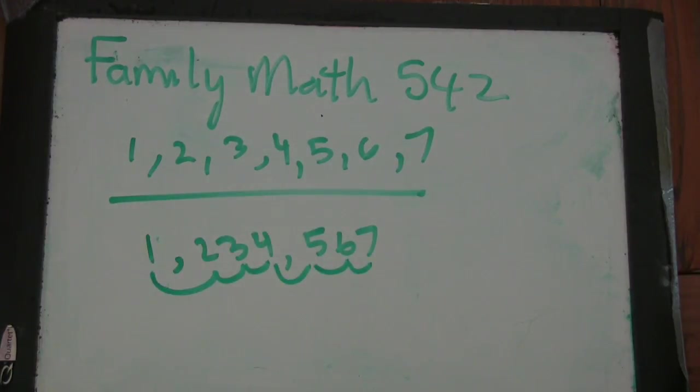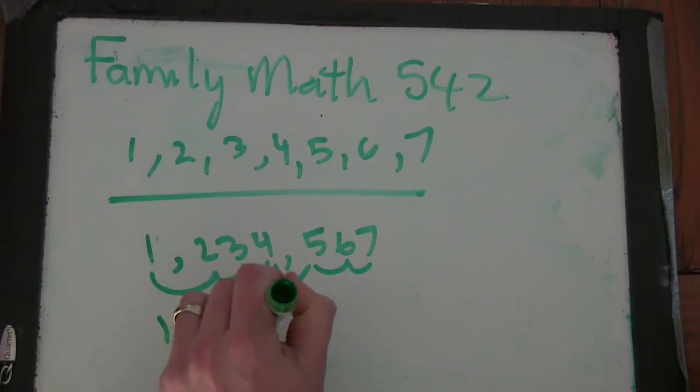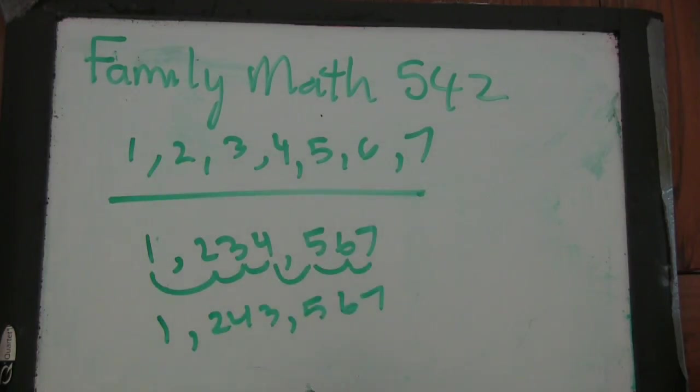But can you give me a number that wouldn't work? 1, 2, 4, 3, 5, 6, 7. Very good. Because 2 and 4 are consecutive digits and they share a common divisor.